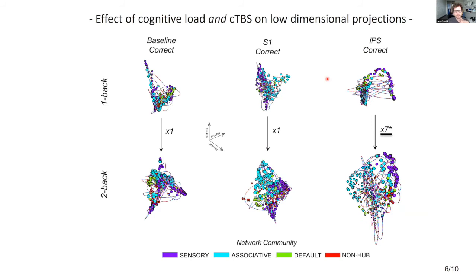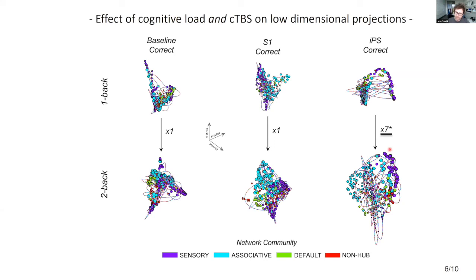We then projected and analyzed this low-dimensional manifold in independent space, with the baseline condition, the S1 condition, and the parietal condition for one-back and two-back. Each dot represents a brain region — we have 333 regions — color-coded based on broad whole-brain networks. You can appreciate that overall, when transitioning from a low to a high working memory load condition, there is an expansion of this manifold. Interestingly, following perturbation of the parietal cortex, this expansion seems significantly greater compared to what we observe in the S1 condition.